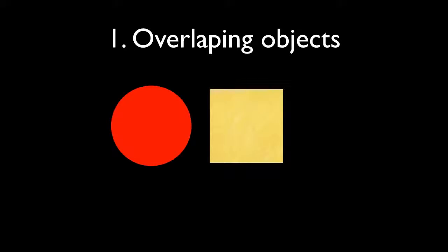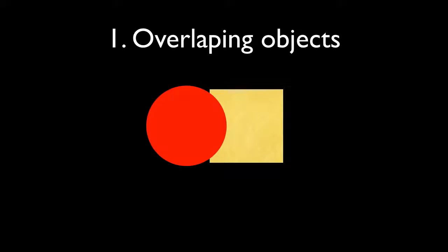The first method is overlapping objects. Here you see a circle and a square, and it's hard to tell which one is closer to the viewer. The square is a little bit brighter in color, the circle is a little bit warmer — those might make each appear closer — but we're not going to talk about color and depth quite yet. If I overlap them, you can really tell that the circle is definitely in front of the square.